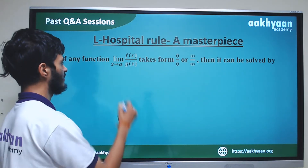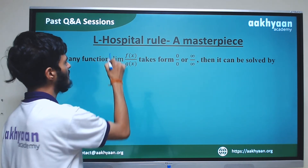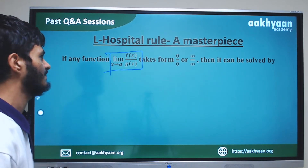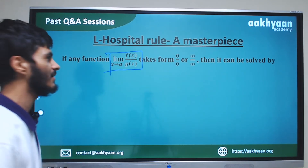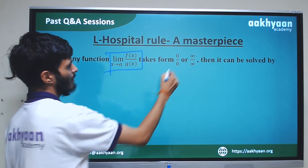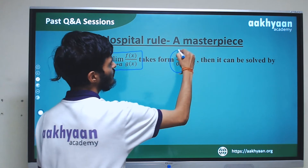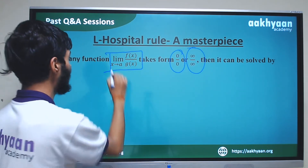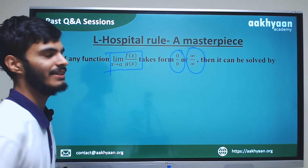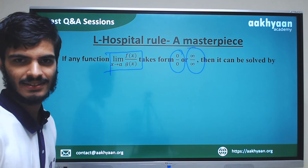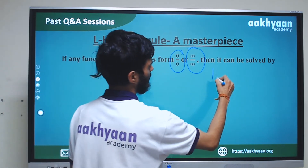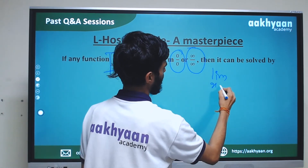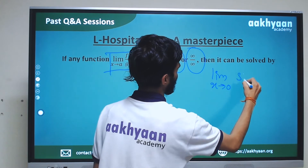If we have limit x tends to a of f(x) by g(x), and it comes to an indeterminate form — zero by zero or infinity by infinity — then we apply L'Hôpital's Rule.